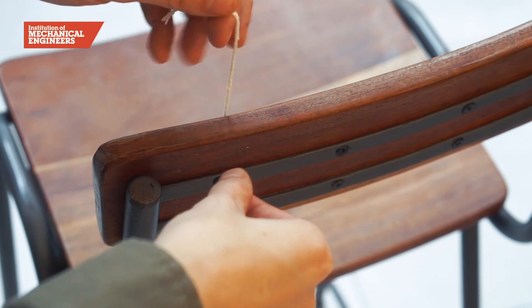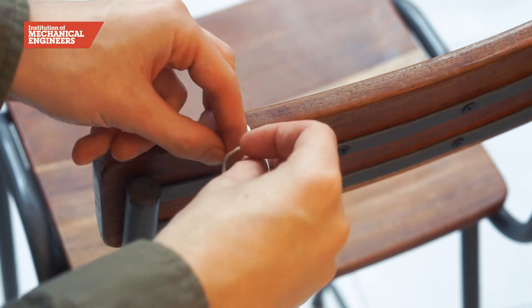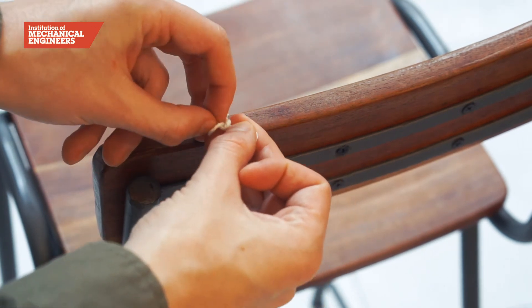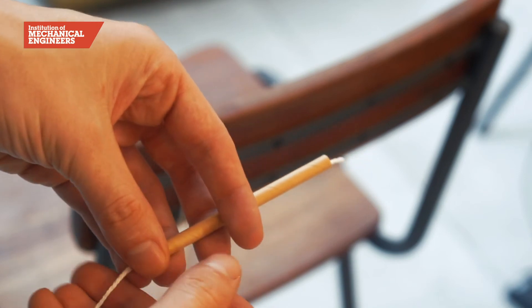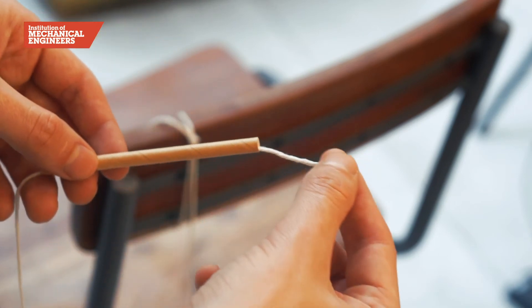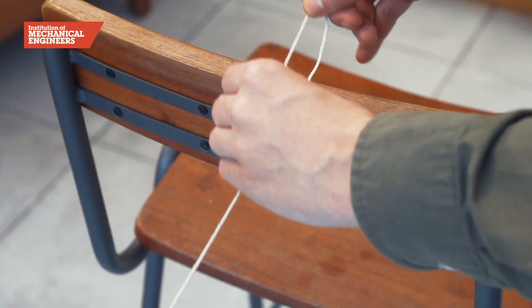First we will take the string and tie one end to a chair, doorknob, or other support. Then we will thread the other end of the string through a straw, pull the string tight, and tie it to another support in the room.